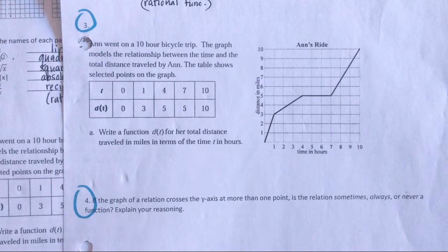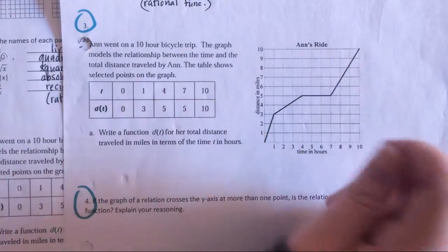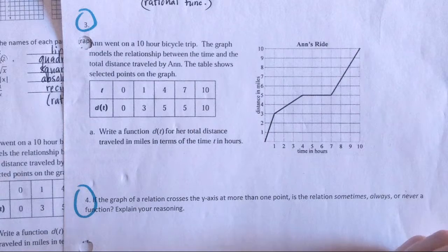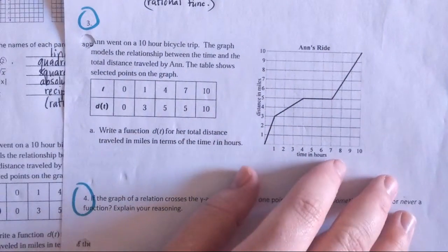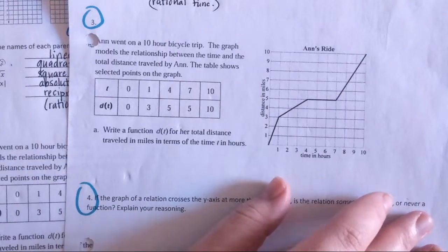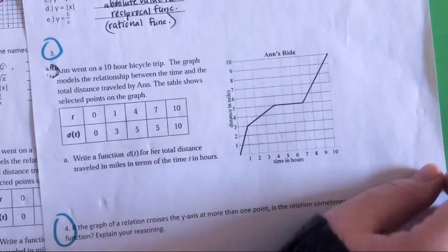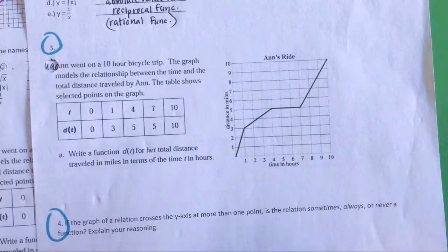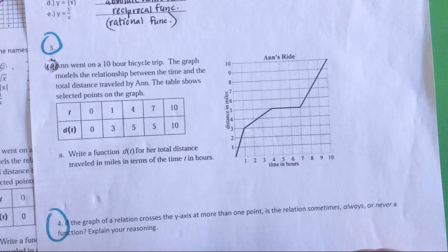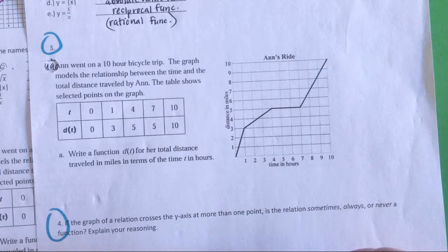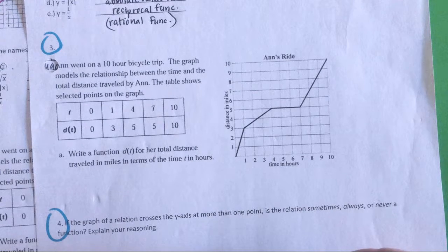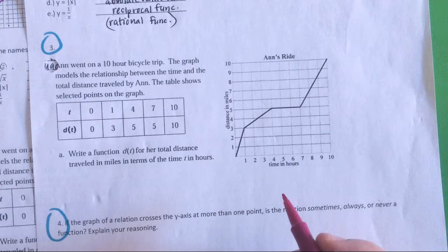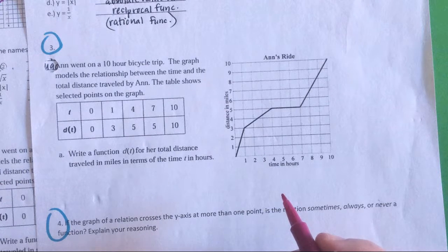Starting with this math workshop, there's this weird graph about this girl Ann and she went on a bike trip. This shows how it went on her ride. It says write a function to represent her total distance traveled in miles in terms of time. So first of all, let's make fun of poor Ann. She did go 10 miles total. How many hours did it take her? 10. So she went how much per hour then? It took her 10 hours to go 10 miles, so one mile per hour.